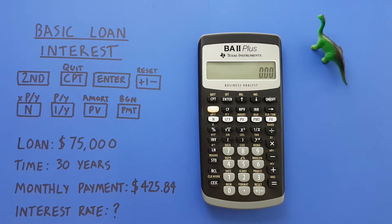For our example, let's imagine we had a loan of $75,000 over a period of 30 years with monthly payments of $425.84, and wanted to determine what our interest rate would be.